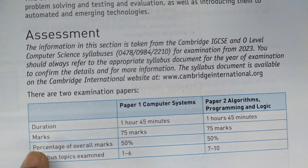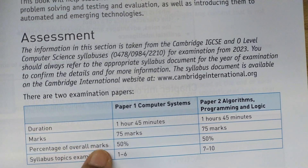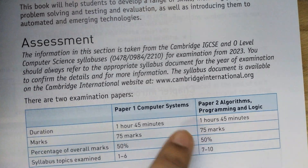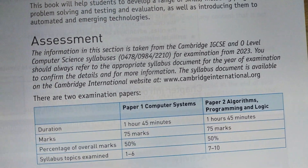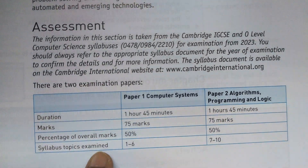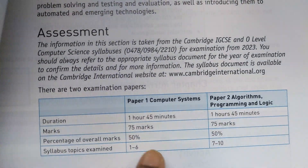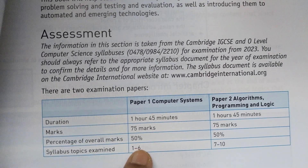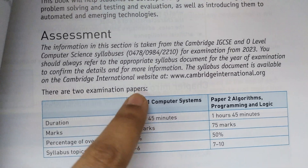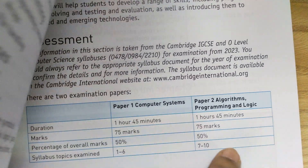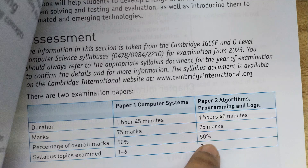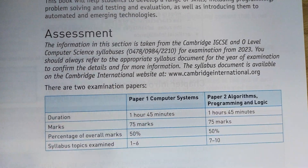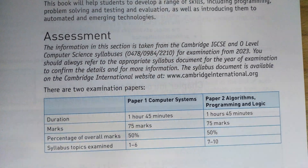The overall marks will be 50 percent for each of these papers. Topics from section one — topics one through six — will appear in paper one, and topics seven through ten will be coming in paper two.